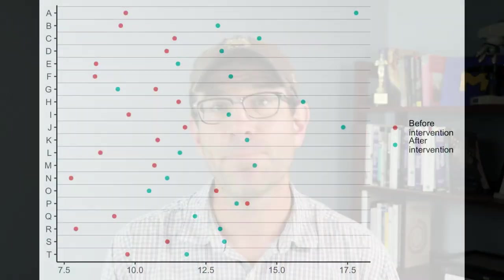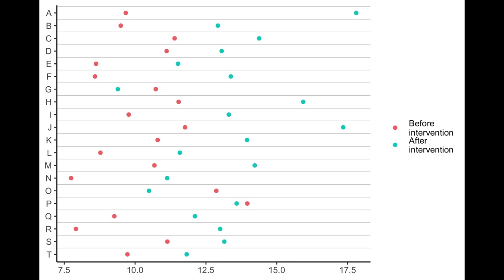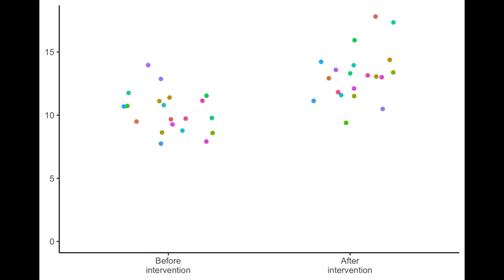For example, we might put all of the individuals displayed on the y-axis and then along the x-axis we could put the continuous variable. That way we know that those individuals or those points in a row are all connected together because they're anchored to the entity on that y-axis. Alternatively, we could take all the points from the same entities, the same individuals, and give them the same color. The downside of that, of course, is that if you get more than five different entities, you quickly run out of the ability to discriminate between those different colors.